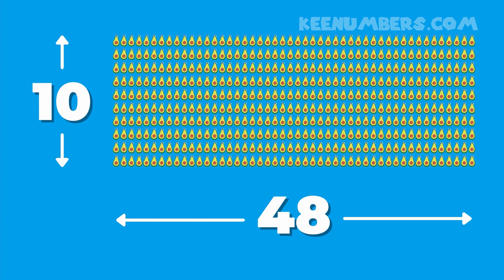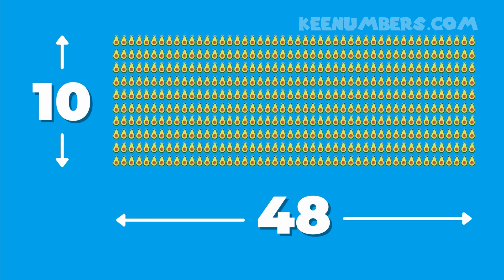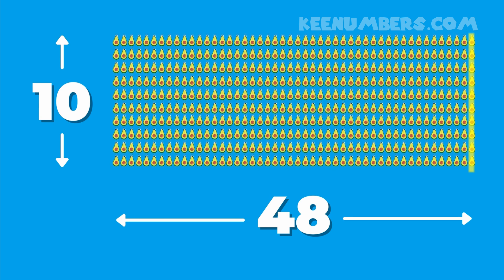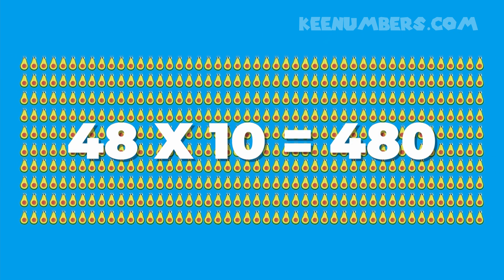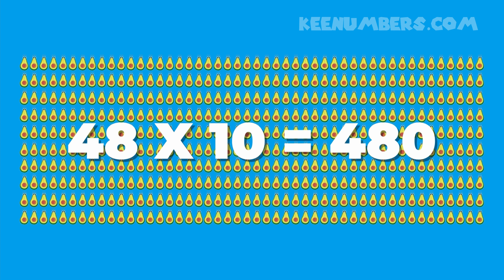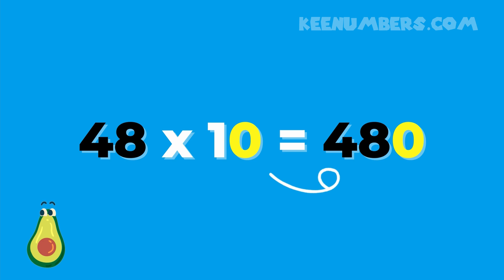There's a shortcut here where you can just attach the zero to 48. Let's illustrate this: we have 48 tens. Each of these columns of avocados has 10 avocados, and we have 48 of these columns. So we count 10, 20, 30, 40, 50, 60 and we keep counting and we'll get 480 avocados. 48 times 10 is 480 — that is to say, 48 tens is 480. The shortcut is we just attach the zero to the 48 and we get 480.